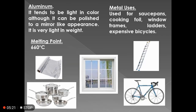First is aluminium. Aluminium has good malleability, that's why it is used for cooking foils. It tends to be light in color, although it can be polished to a mirror-like appearance. It is very light in weight, that's why it is used in aeroplanes. Its melting point is 660 degrees Celsius. Its applications include window frames, ladders, bicycles, and cooking foils.